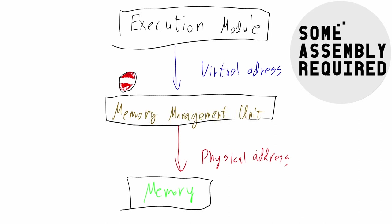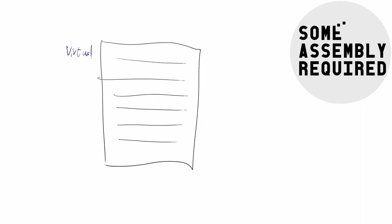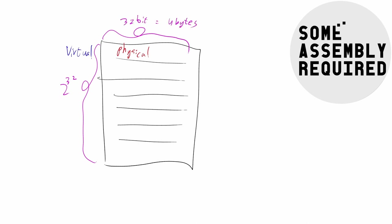In order to perform this mapping, the MMU needs to know which virtual address maps to which physical one. The operating system uses a table where the index is the virtual address and the content is the physical one. For a 32-bit CPU with 4 GB of addressable memory, you'd need 4 billion 32-bit entries — requiring 16 GB just to store the table for a 4 GB address space. Needless to say, that's not how it's done.